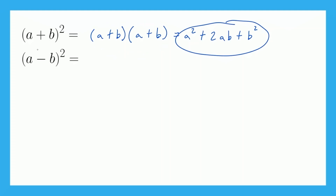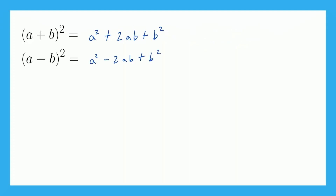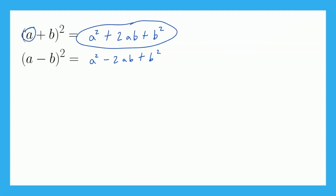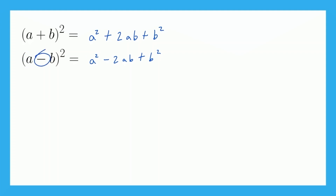The same thing happens with the second example. The only difference is that the sign on the middle term is going to be negative, so it's minus two ab in the middle. So when we have a perfect square — either a plus b squared or a minus b squared — we can shortcut right to the answer. All we do is square the first term, then plus or minus two times the first term times the second term, and then add the square of the second term.